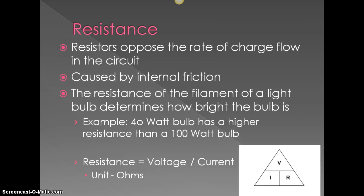Resistance talks about things that will either hinder or change the charge or the flow of that charge. And so resistors will oppose the rate of charge. It's caused by internal friction, and the resistance of the filament of a light bulb determines how bright the light bulb is. So as an example, a 40 watt bulb has a higher resistance than a 100 watt bulb. Resistance is equal to voltage over current, or you could calculate this way, voltage is equal to current times resistance, and the unit is the ohm.